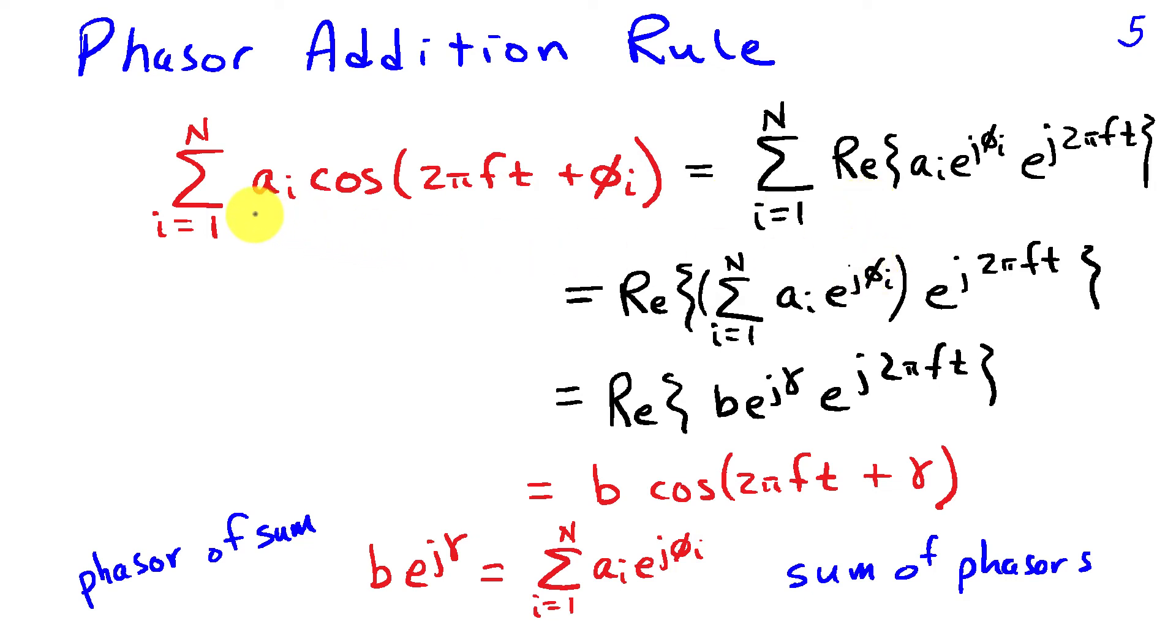If my individual sinusoids, suppose there's capital N of them, have amplitudes a sub i and phases phi sub i, then the sum is going to be a sinusoid of the same frequency f but have amplitude b and phase gamma, where the phasor b e to the j gamma is the sum i equals 1 to N of a i e to the j phi i. So once again, the phasor for the sum of the sinusoids is the sum of the phasors associated with the individual sinusoids.